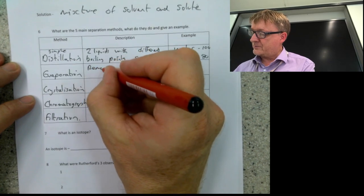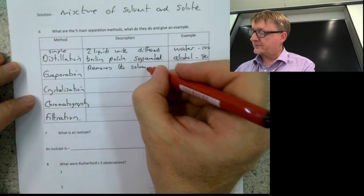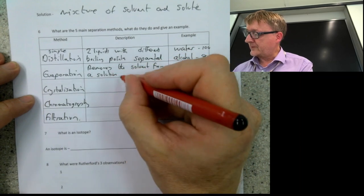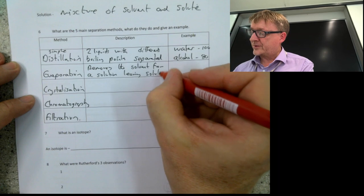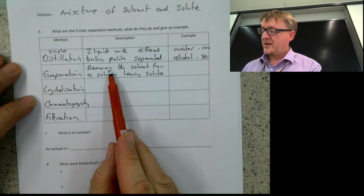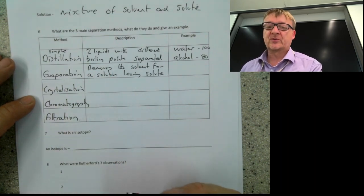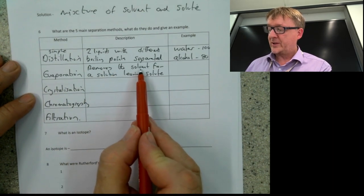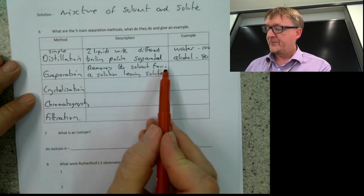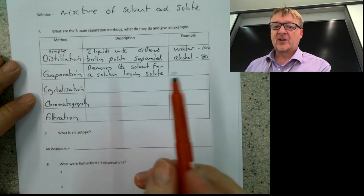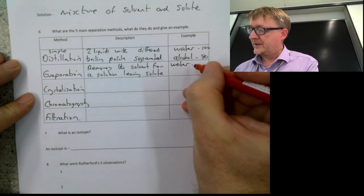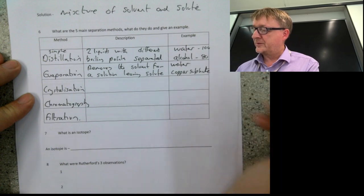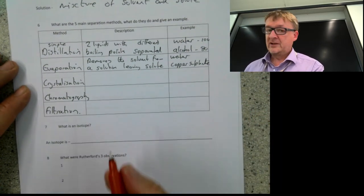Evaporation removes the solvent from a solution, leaving the solute. So if you have water and copper sulfate: water is the solvent (the liquid) and it is taken away, leaving the solute — copper sulfate — which is what's dissolved in it. So water is the solvent and copper sulfate, the blue stuff, is the solute.